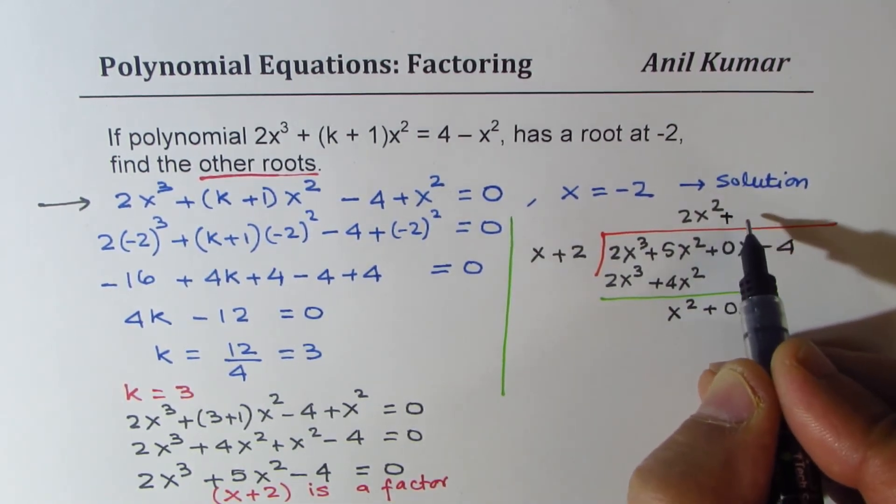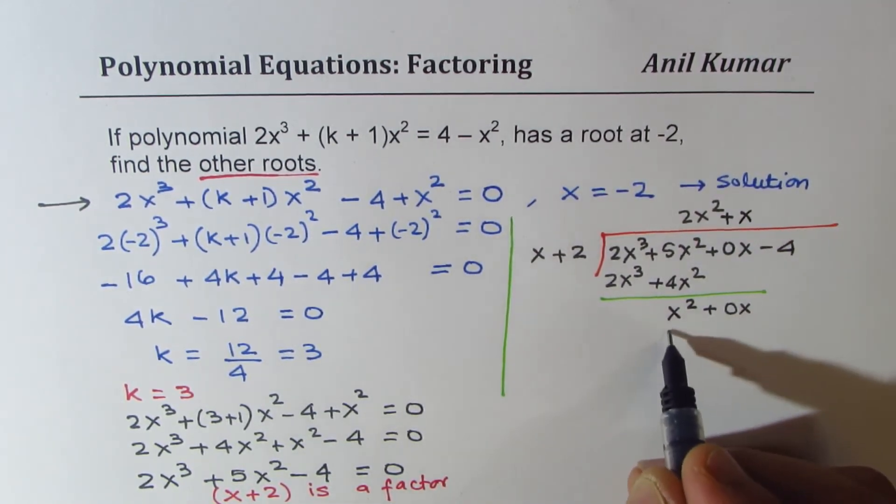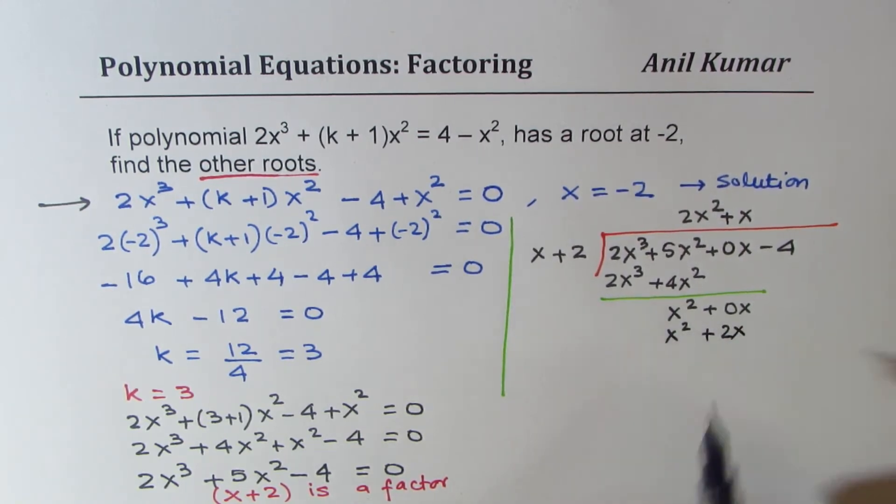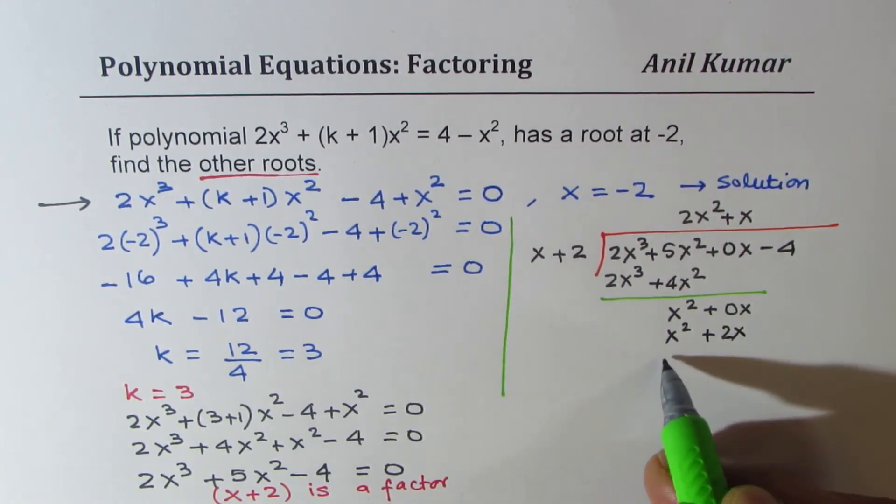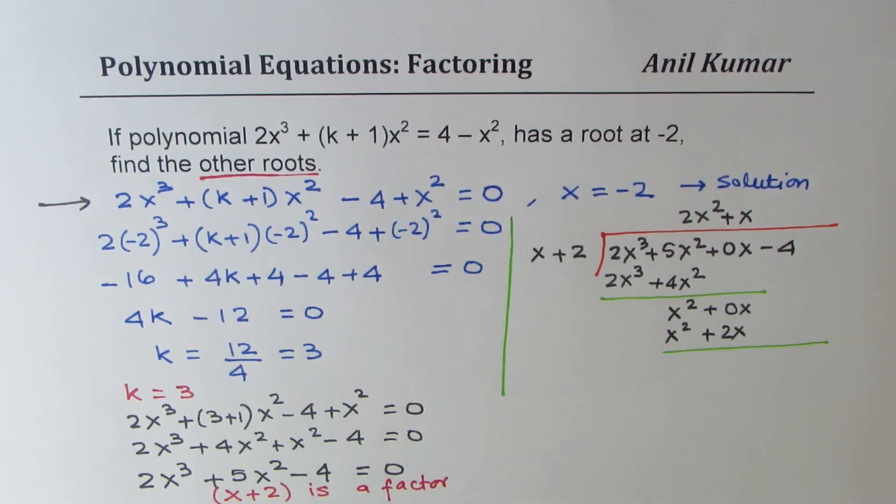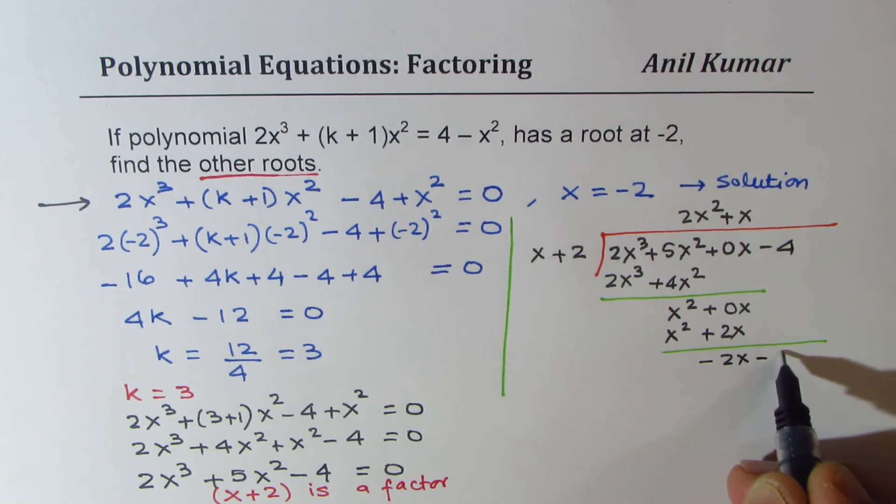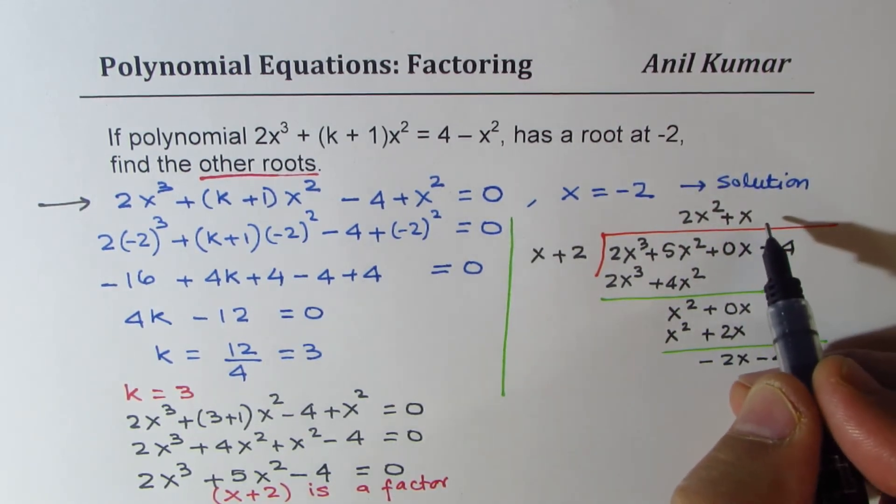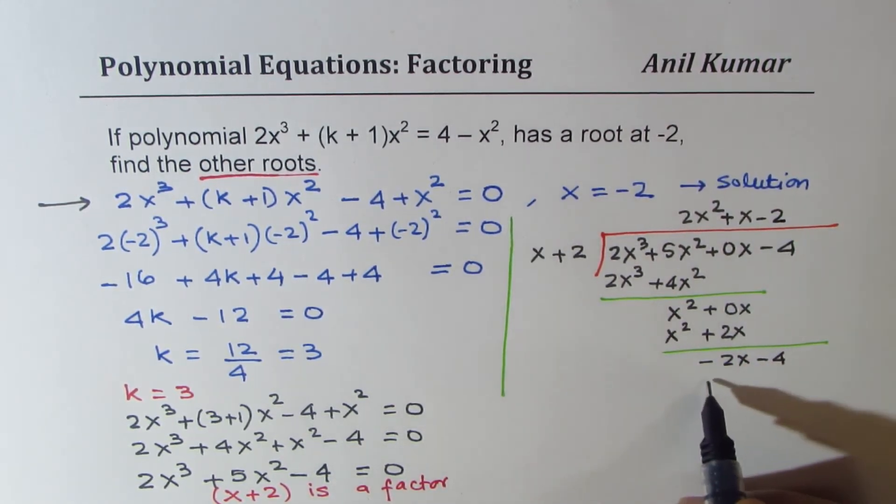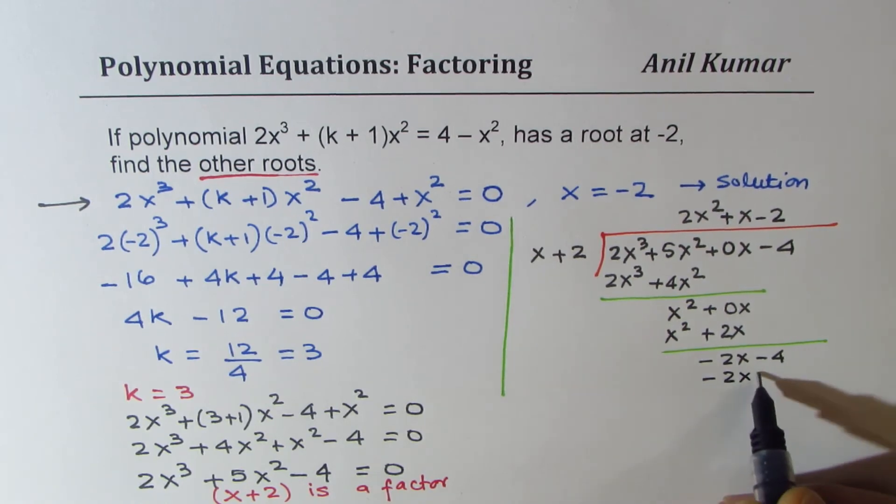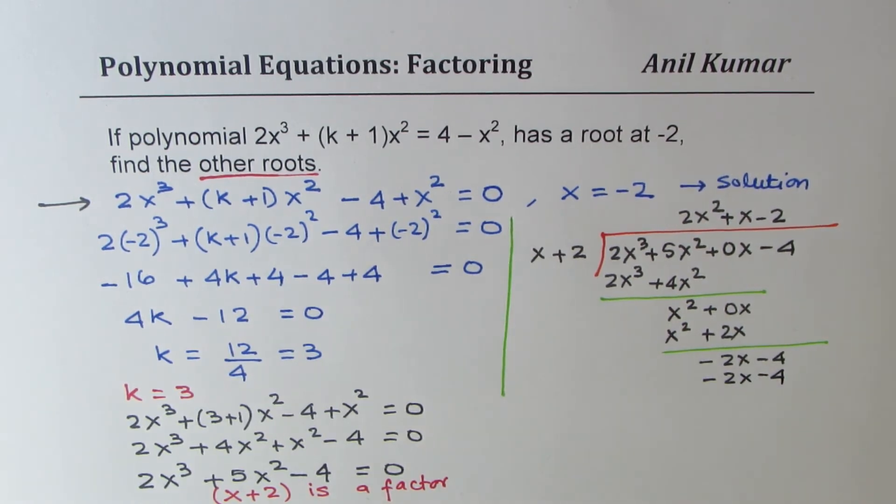Now, you need to times it with x in the quotient. You get x² + 2x. Taking away gives you -2x. Bring down -4. Now, we can multiply by -2. That gives you -2x - 4. And as expected, the remainder is 0.